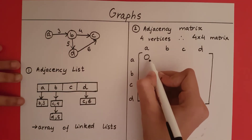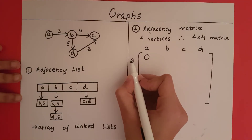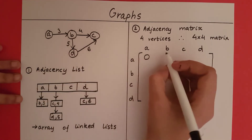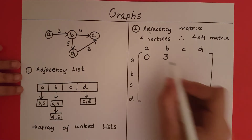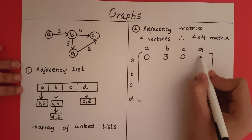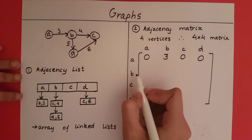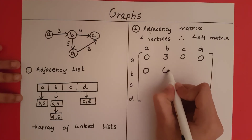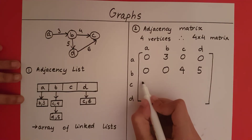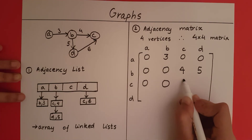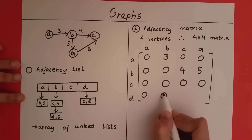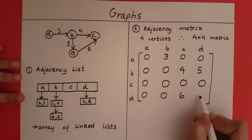In this example there is no edge A, A, so I give a 0. For A, B — yes, there is an edge with weight 3, so I put 3. A, C has no edge so 0; A, D has no edge so 0. B, A is 0; B, B is 0; B, C has weight 4; B, D has weight 5. C, A, C, B, C, C, and C, D all do not exist — all 0. D, A is 0; D, B is 0; D, C has weight 6; D, D does not exist.